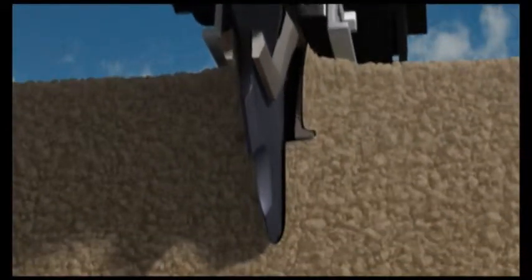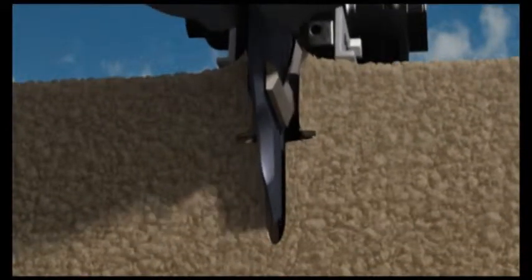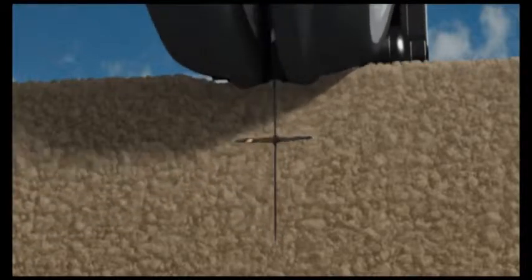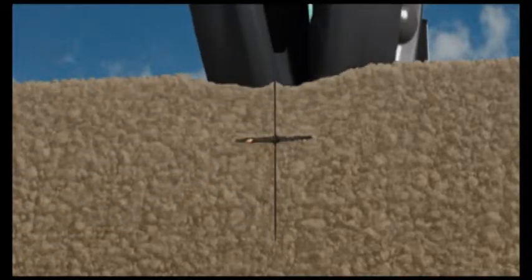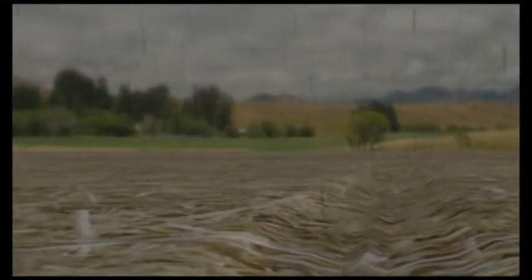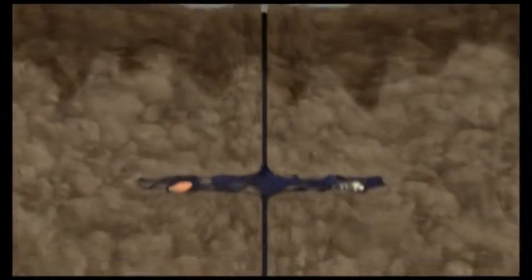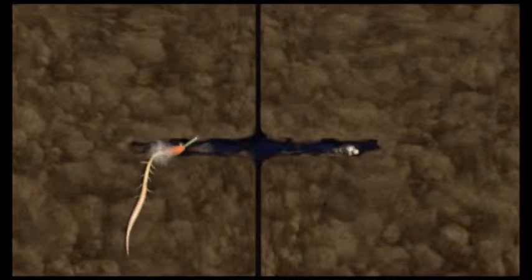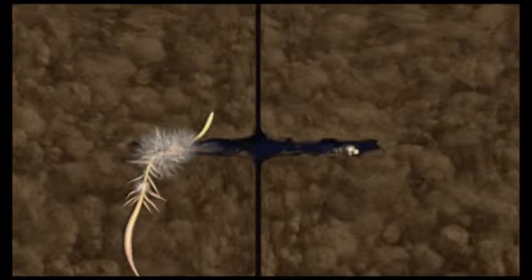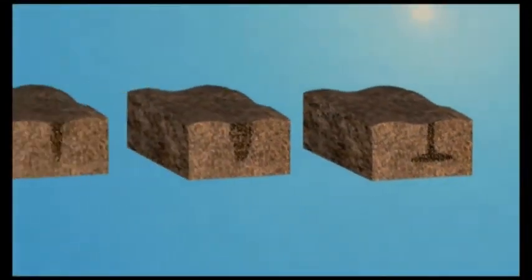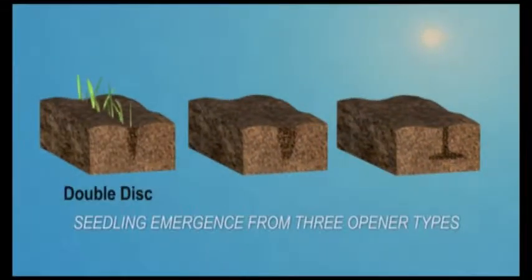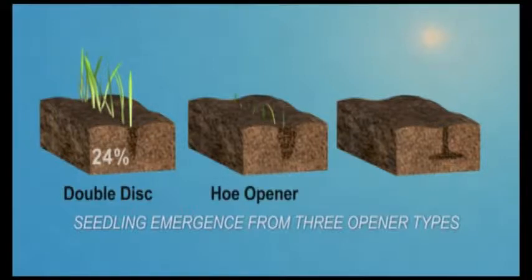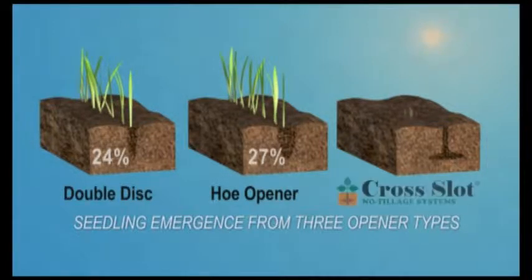Cross-slot openers make horizontal slots shaped like an inverted T. Humidity is trapped in the seed zone beneath a mulch of crop residue. Both the soil and this residue are then folded back over the slot. This cocoons the seed and seedlings in a humid microenvironment. It also has good soil-to-seed contact. They therefore get the best of both worlds. The end result is the highest possible reliability of seedling emergence from dry soils, and horizontal slots are unique to cross-slot.